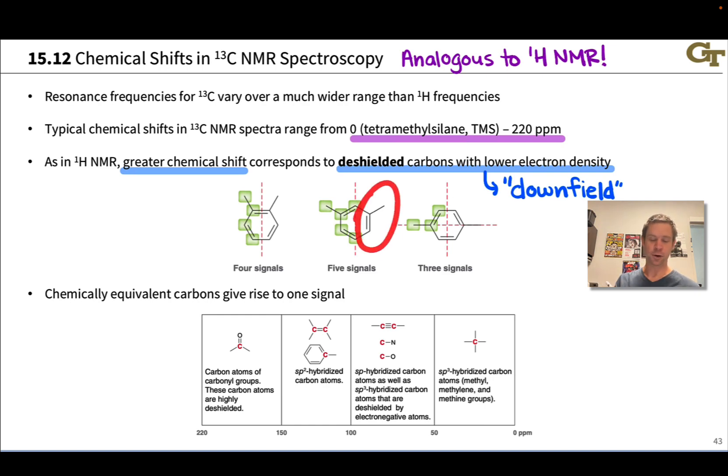The carbons over here though are symmetrically related to those on the left, and so we would expect these three to give the same chemical shifts to be part of the same signal as these three over here. So we would expect five signals total in this molecule in the middle, and it's worth pausing the video and working through the other two examples to verify that we would expect four signals in this case and only three signals in this case.